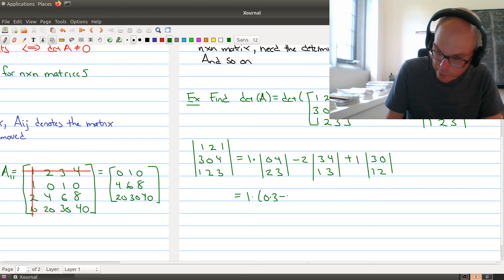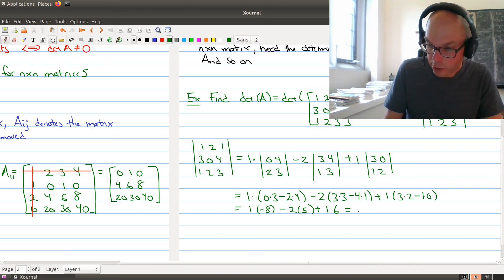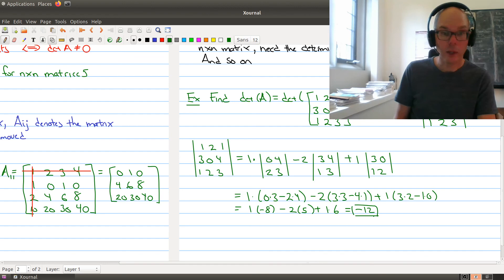And now we can easily compute all of these because these are all 2 by 2 matrices, right? So this is 0 times 3 minus 2 times 4. This is 3 times 3 minus 4 times 1. And this is 3 times 2 minus 1 times 0. And let's do a little bit more arithmetic here. So here I get minus 8. Here I get 9 minus 4, which is 5. And over here I'm getting 1 times 6. So I get a negative 8 minus 10, so negative 18 plus 6 gives me minus 12. So that is my determinant. So this is our first glimpse of what a determinant is. After the break, we'll talk about other ways we can compute the determinant.